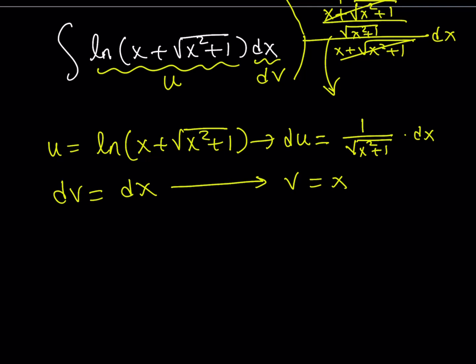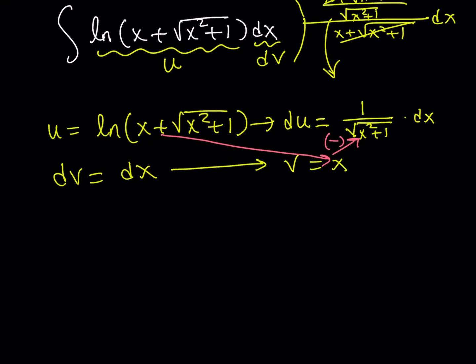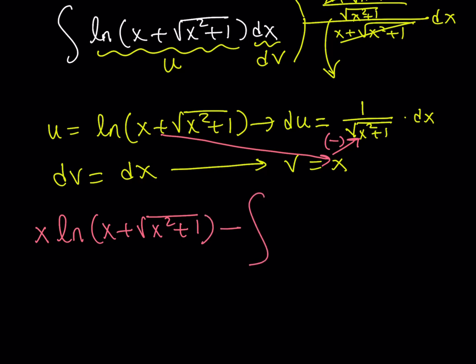I'm supposed to go with the uv first — that's my uv — and then v du, with a minus sign in between. I'm going to multiply x times that first, so it's going to look like x times ln of x plus the square root of x squared plus 1. This is my uv, minus the integral of v du.